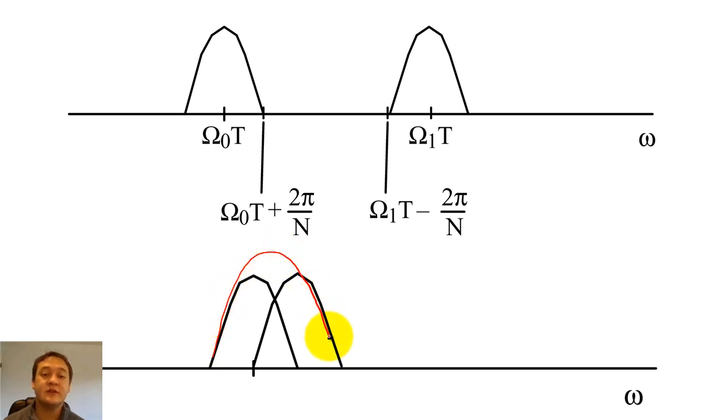Since the DFT will add these main lobes together, we will not be able to distinguish the two cosines from each other if their frequencies are too similar. The ability to distinguish the DFT peaks of two cosines is called the resolution of the system.